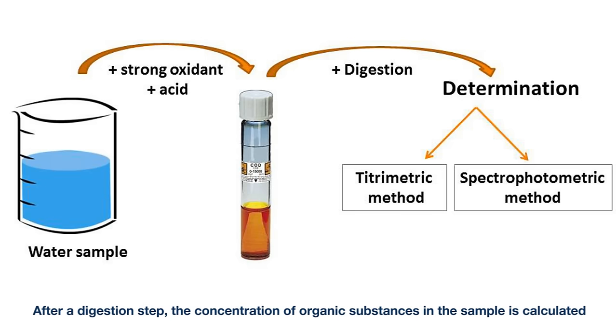After a digestion step, the concentration of organic substances in the sample is calculated from a titrimetric or spectrophotometric determination of the remaining oxidant.